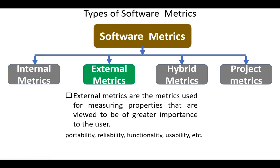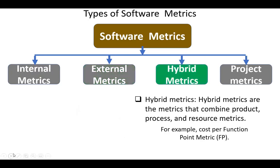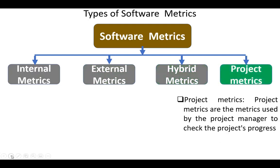So internal metrics are of benefit to the developer, while external metrics are of benefit to the user. Hybrid metrics are the metrics that combine product, process, and resource metrics. For example, cost-per-function-point metrics.